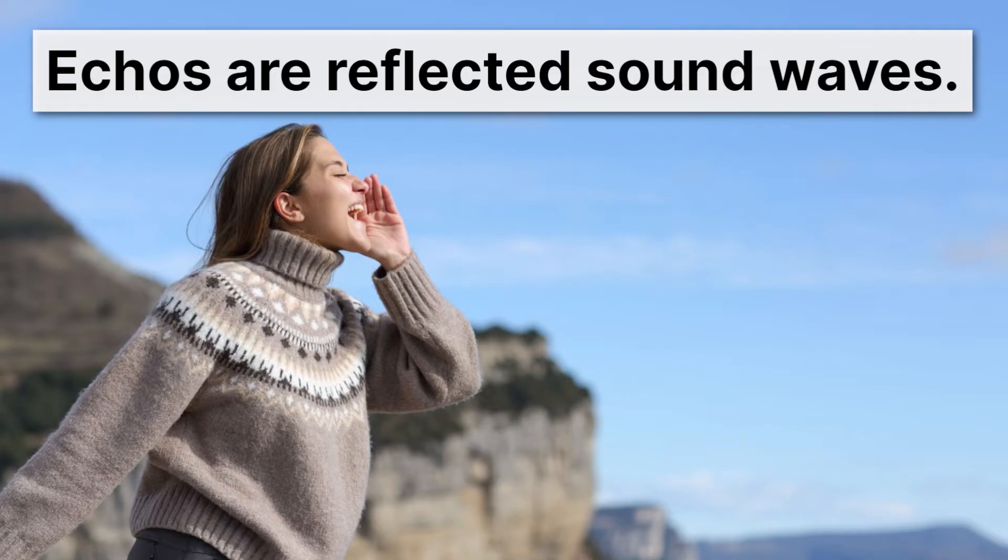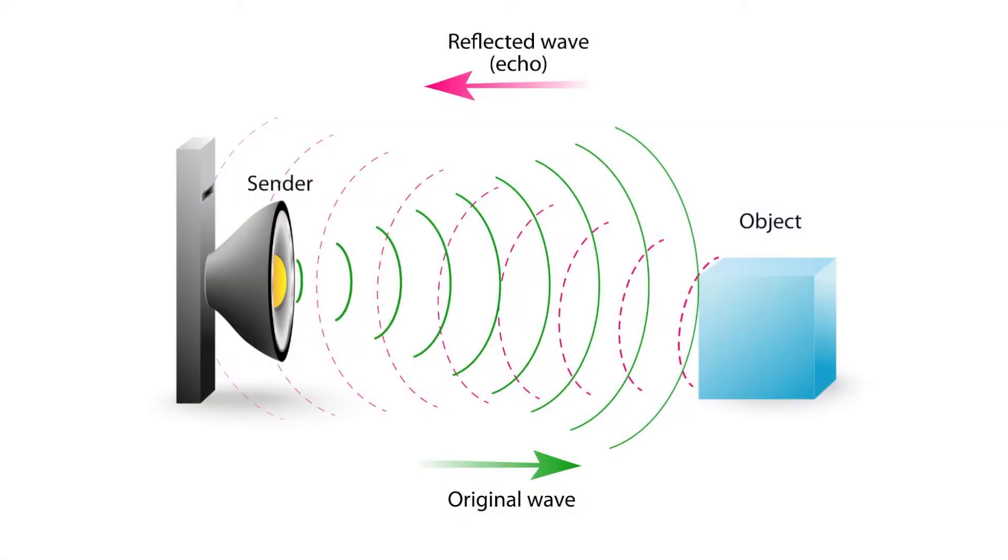So if we picture what the waves are doing, we can imagine a speaker or a person. We've labeled it here the sender of the sound wave. And in the green, we have the original wave, and it travels out. It hits some object in the distance. Maybe it's a cliff or a valley, and it bounces off. And in pink, we see the reflected wave, the echo.